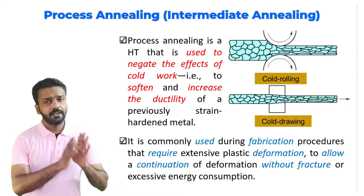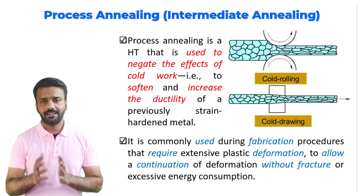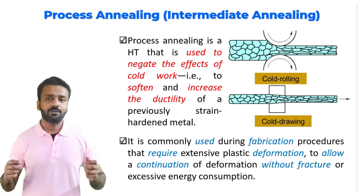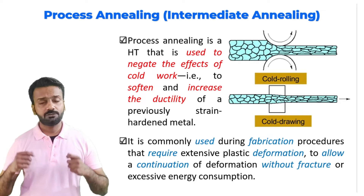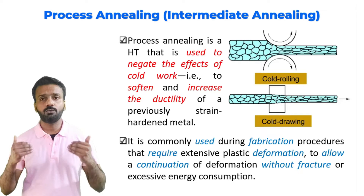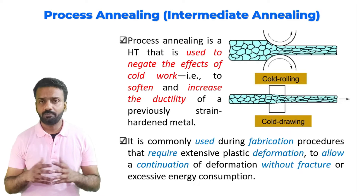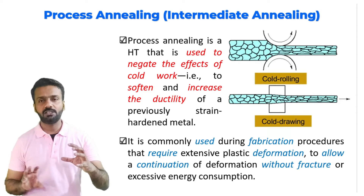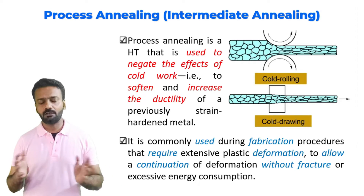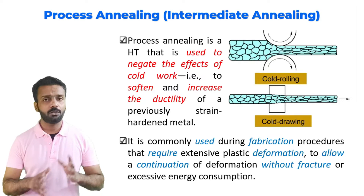The third heat treatment related to annealing is process annealing. As the name suggests, it is carried out during the processing of a material. During processing, the material becomes very hard because of strain hardening or work hardening. We do intermittent annealing so that after processing the material becomes softer, then we process it again. This cycle goes on repeatedly, allowing the material to be extensively deformed through process annealing.